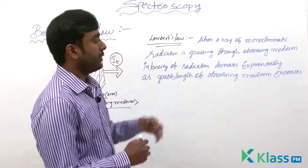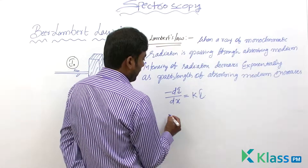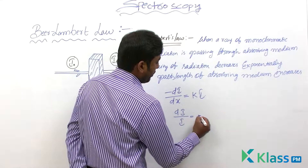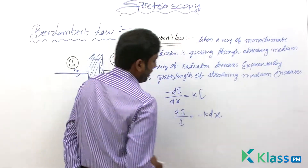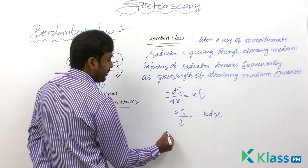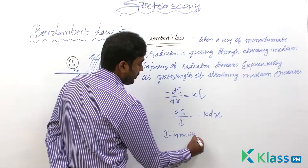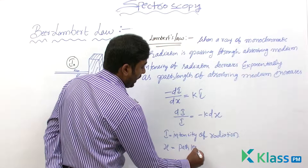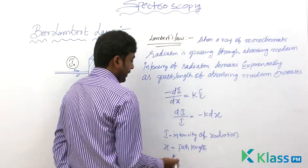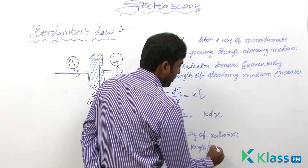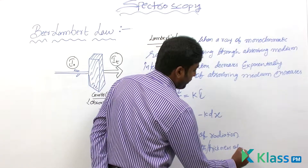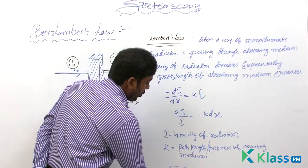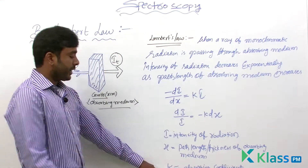We will write a mathematical equation for this definition. We can write: dI / I = −k dx. Here, I is the intensity of radiation, x is the path length or thickness of the absorbing medium, and k is the absorbing coefficient — it is a constant.